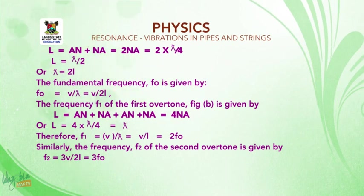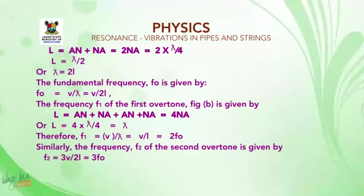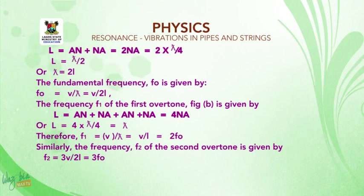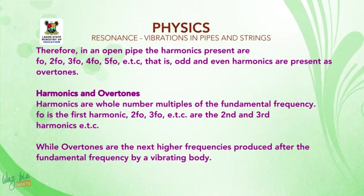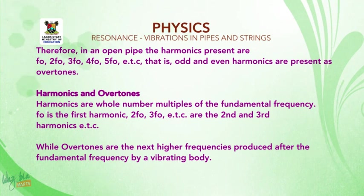Then F₁ = V/λ, and when we substitute L for λ, F₁ = V/L, which is also equal to 2F₀. Similarly, the frequency of the second overtone is given by F₂ = 3V/2L, which is also equal to 3F₀. Therefore, in an open pipe, the harmonics present are F₀, 2F₀, 3F₀, 4F₀, 5F₀, etc. — that is, both odd and even harmonics are present as overtones.